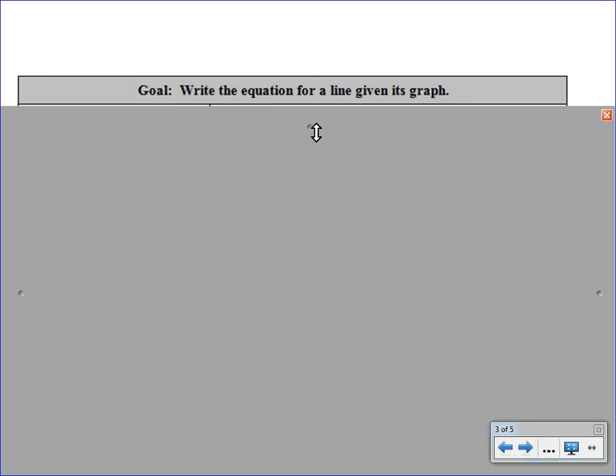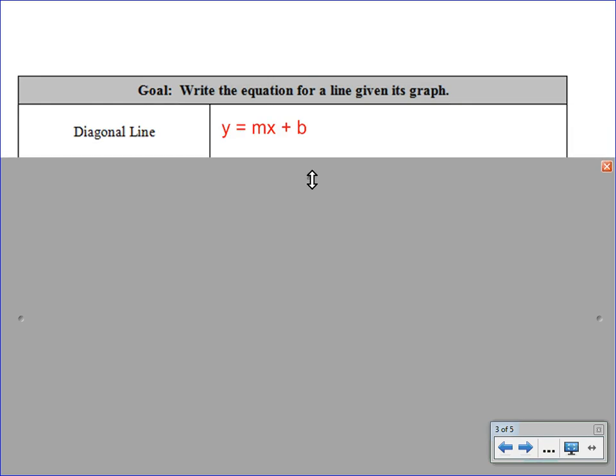Think back to the three different types of lines that we worked with in the past. The first and the one that comes up most often is a diagonal line. So any time you have a diagonal line, you are going to go for the y equals mx plus b form. And you might just want to make a note to yourself. Circle the m and make a note that that is the slope.